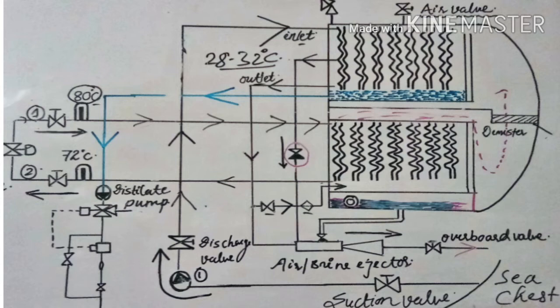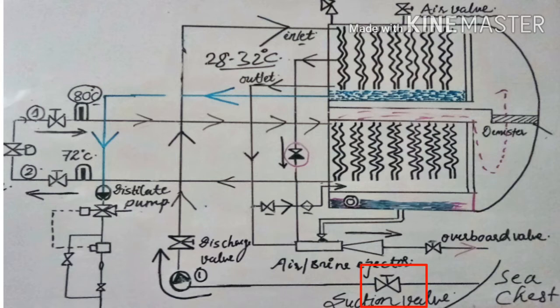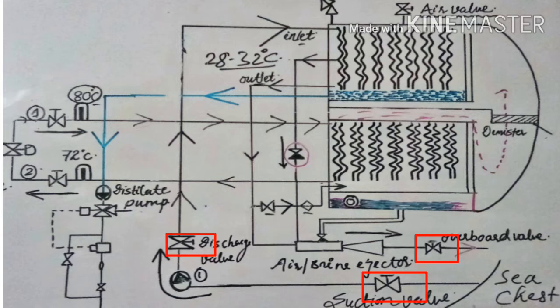First of all, you can see here there is a sea water line which is directly fitted to the condenser. In the sea water line there is a sea water pump suction valve, a discharge valve, and an overboard valve. Make sure the sea water pump suction, discharge, and overboard valves are open, then start the sea water pump.